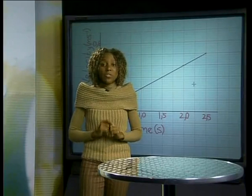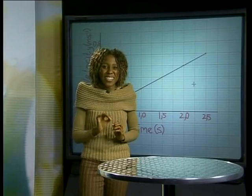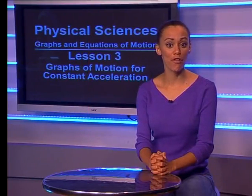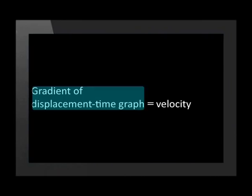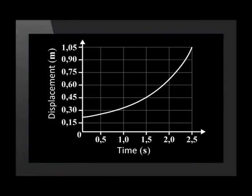Remember, the rate of change of velocity is acceleration. So, the trolley was accelerating uniformly. Now we know that the velocity-time graph for constant acceleration is a straight line. Remember previously, for constant velocity, we used the gradient of the displacement-time graph to calculate the velocity. But here, the velocity increases, so the displacement-time graph is not a straight line. The displacement-versus-time graph for constant acceleration is a curve.